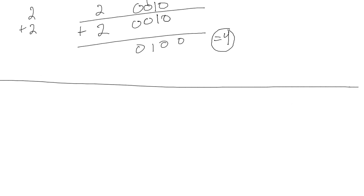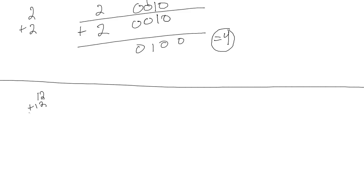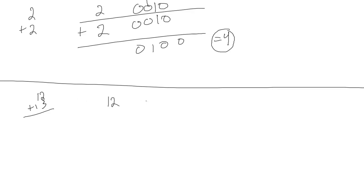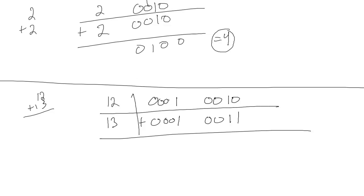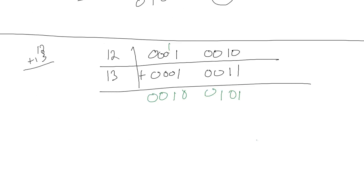Let's do two 2-digit numbers. Let's do 12 and 13. So we write 12 out — that's 0001 for the 1, and then 0010 for the 2. Then we put 13 down: 0001 for the 1, and 0011 for the 3. We add these two together and we get 0101 and 0100. Reading those groups in binary, that's 2 and 5 — so our answer is 25.